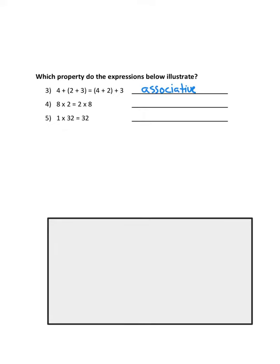In the second one, what you'll notice is 8 × 2 = 2 × 8. The only thing that changed is the order of the numbers, and the commutative property says the order of the numbers does not matter.